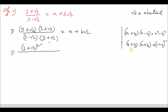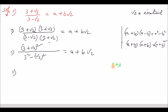For the denominator, a plus b into a minus b gives a squared minus b squared, where a is 3 and b is root over 2. So the denominator is 3 squared minus root over 2 whole squared, giving us 9 minus 2 equals 7.